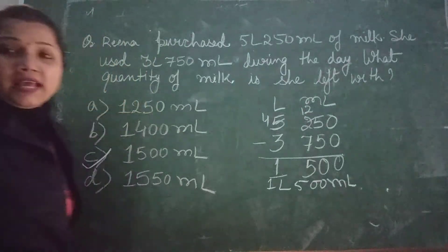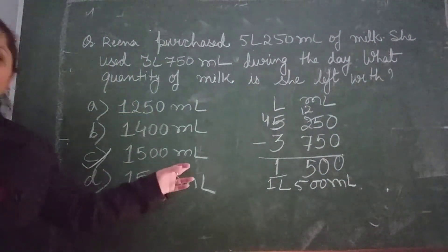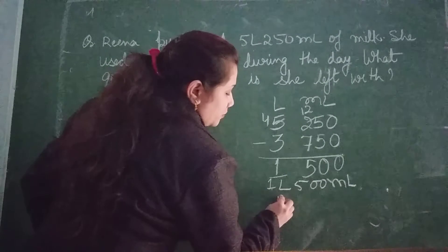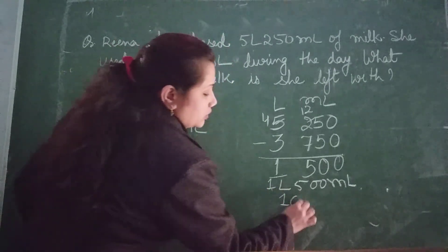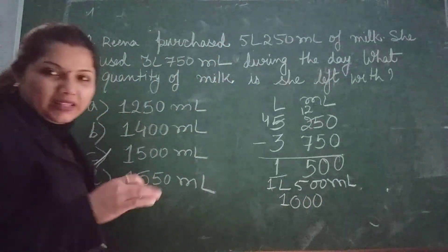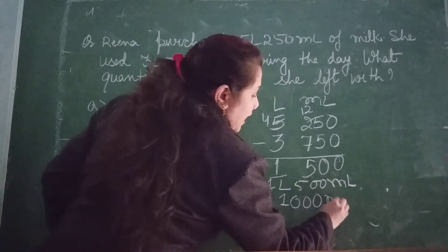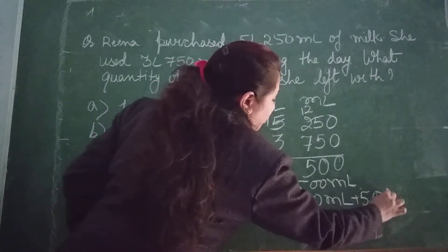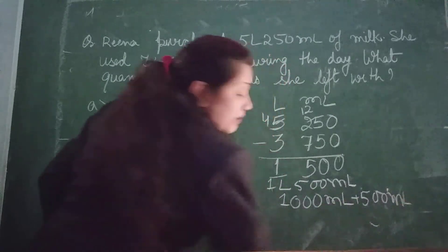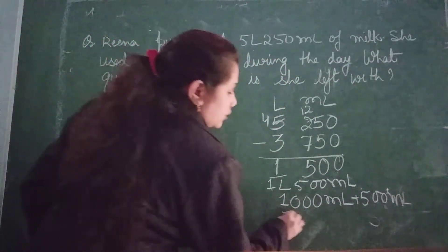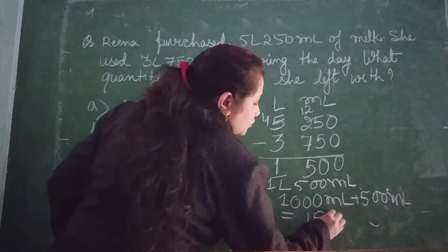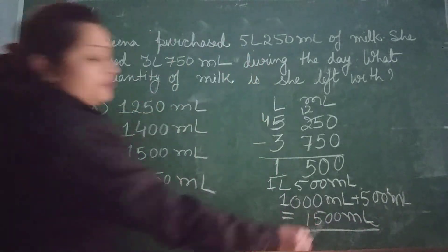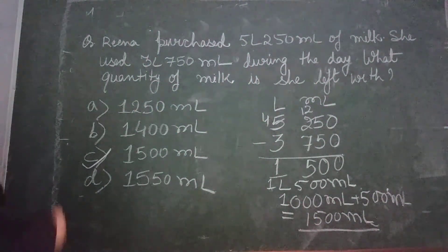The answer is 1 litre 500 ml, but the option is given in millilitre, so we will convert it. 1 litre is equal to 1000 ml, plus 500 ml, so it will be 1500 ml. Therefore, 1500 ml will be the final answer.